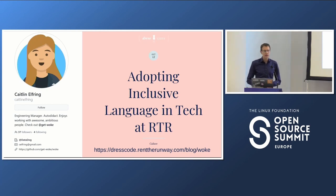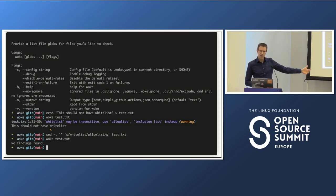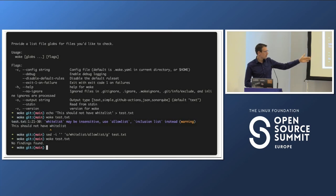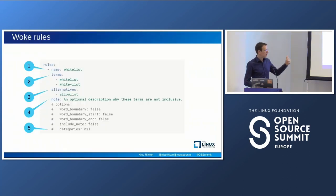I went with woke. Woke was developed by Caitlin Elfring during her time at Rent the Runway, and she introduced it in a blog post. It's a command line tool you can use to check your project. As you can see, there's a file containing the word 'whitelist,' which is considered non-inclusive — it highlights it, explains why it might be insensitive, suggests alternatives, and gives it a level, in this case a warning. Once everything is fine, it says so.